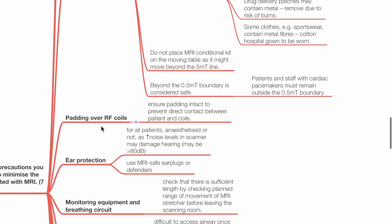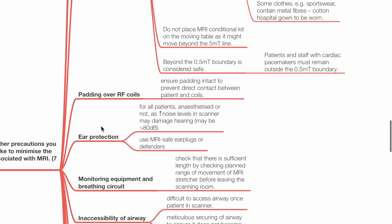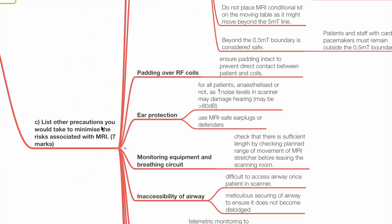Do not place MRI-conditional kit on the moving table as it might move beyond the 5 mT line. Beyond the 0.5 mT boundary is considered safe. Patients and staff with cardiac pacemakers must remain outside the 0.5 mT boundary. Ensure padding is intact to prevent direct contact between the patient and the RF coils.